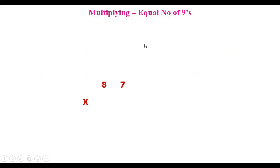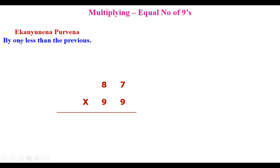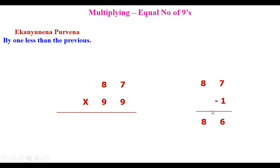Let's take a small example: 87 multiplied with 99. To multiply this, we use a principle called Ekanyunena Purvena, meaning 'by one less than the previous.' So we take 87, subtract 1, and get 86. We put this 86 on the leftmost side of the solution.